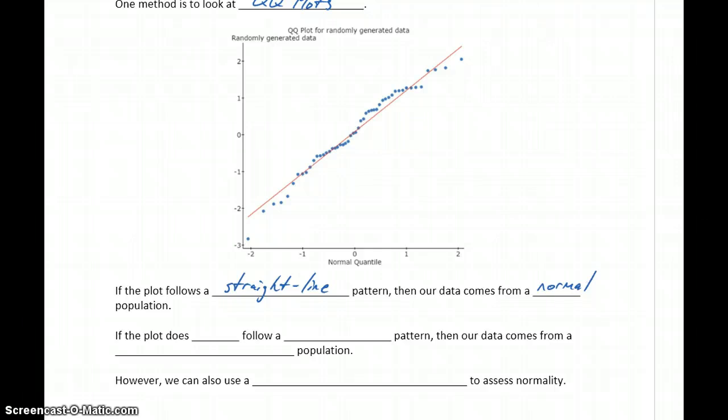If the plot did not follow that straight line pattern, we would say our data comes from a non-normal population.